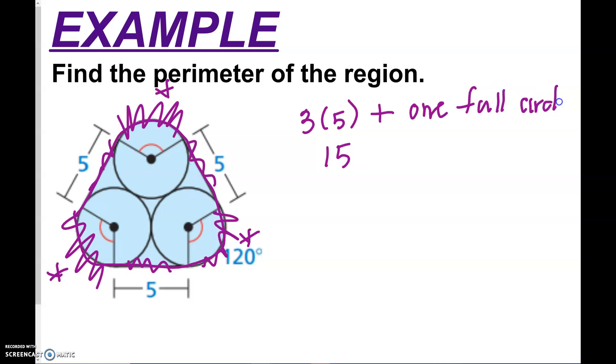So I'm going to need to find 2 pi r. So I need to find my radius here. So what is my radius of one of these circles going to be? So if we look, the distance from here all the way over here, they tell us that this distance is 5.